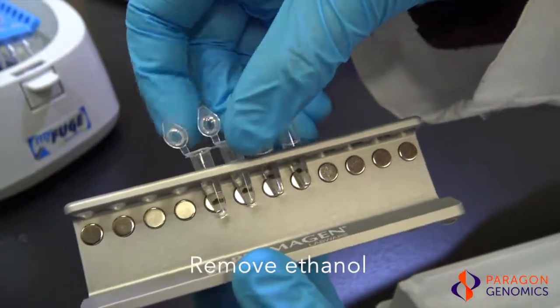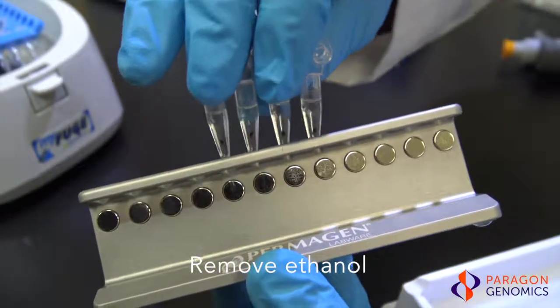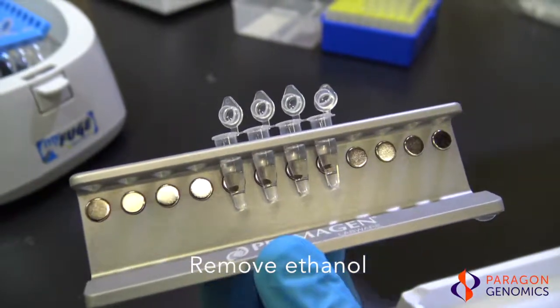Rotate the tubes 180 degrees on the magnetic rack to force the beads to move across the ethanol. The tubes can be returned to the original position afterwards for ease or left as is.